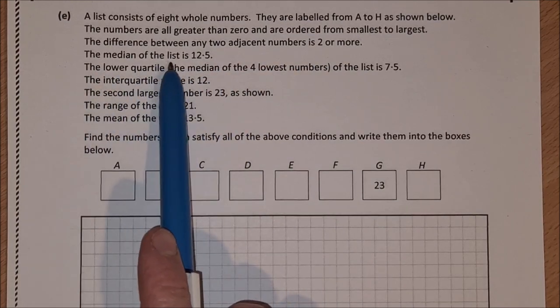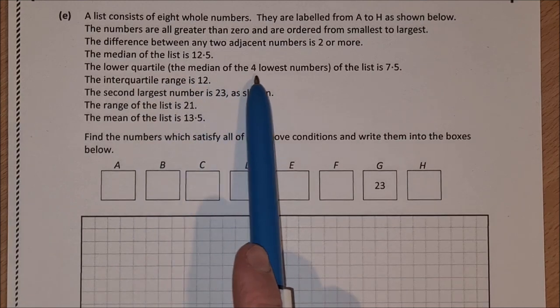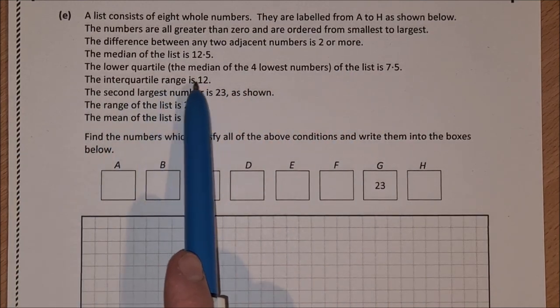The median of the list is 12.5. The lower quartile, which is the median of the four lowest numbers, is 7.5. The interquartile range is 12.